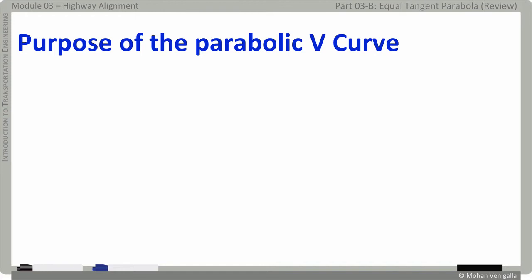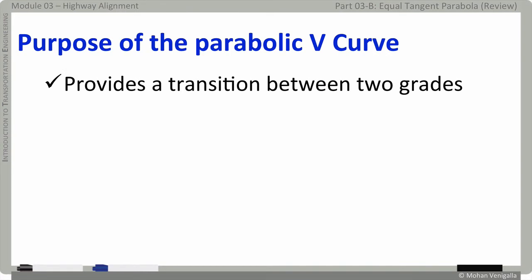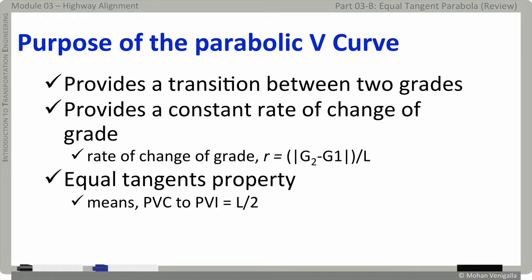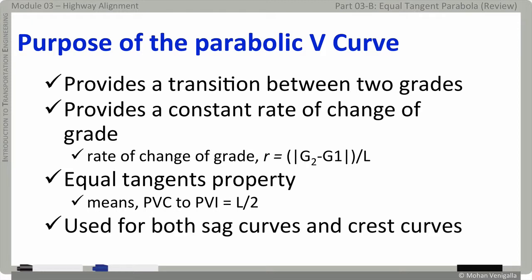Now that you have seen the use of parabolic curves for vertical alignment, let's come to grips with the very purpose and the reason why we use parabolic curve in vertical alignment in the first place. First, it provides a transition between two grades. It provides a constant rate of change in grade given by this formula, which is the rate of change of grade R equals the modulus of the difference between the two grades divided by the length of the curve. It has equal tangents property, which makes the computation less complicated. And it can be used for both crest and sag vertical curves.